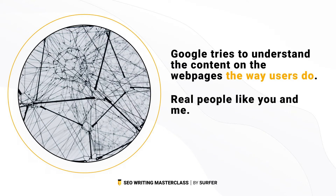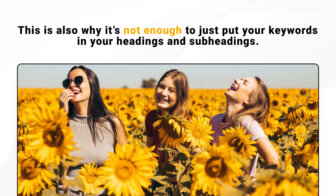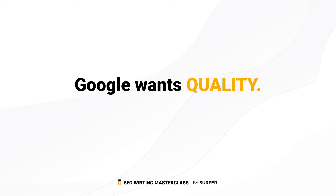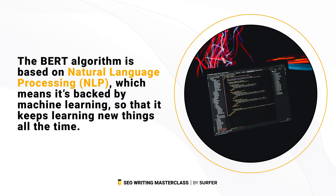Google's algorithms are getting smarter and smarter every day. Google tries to understand the content on web pages the way users do — real people like you and me. They use both simple and advanced algorithms to do this. This is why spamming content won't get you anywhere anymore, no matter how many times you force that keyword into the text. It's not enough to just put your keywords in your headings and subheadings — Google wants quality. There's another algorithm we're sure Google uses to analyze content, and we can use it as well. It's called BERT.